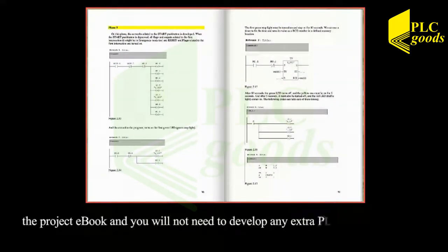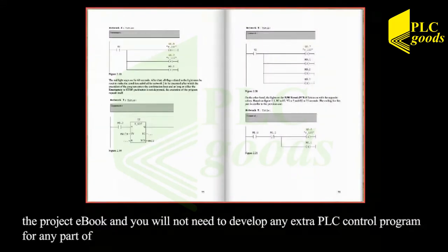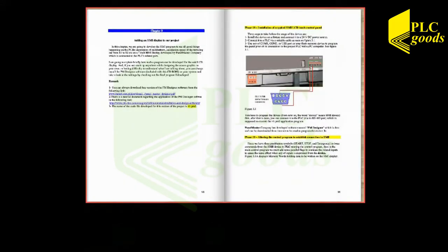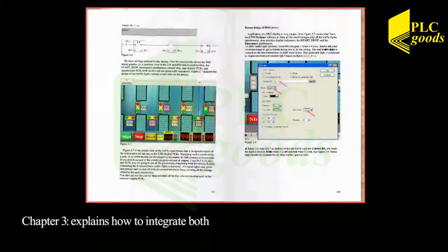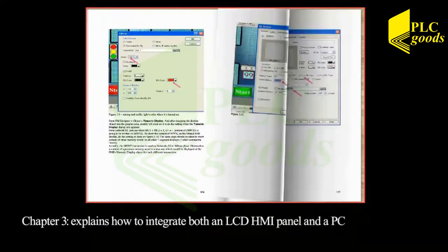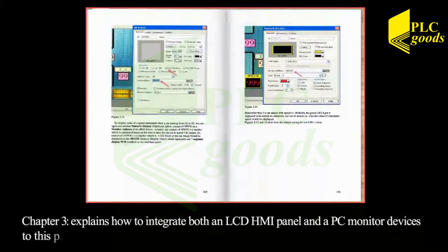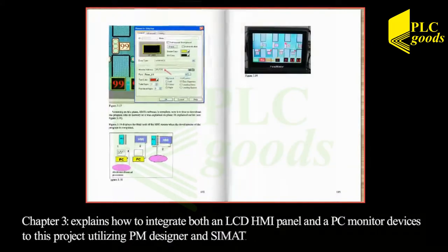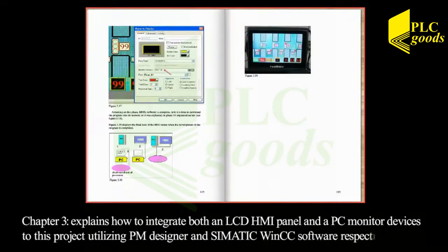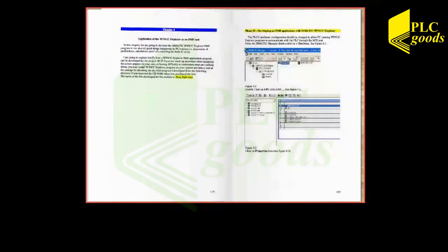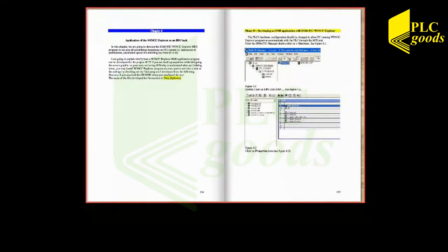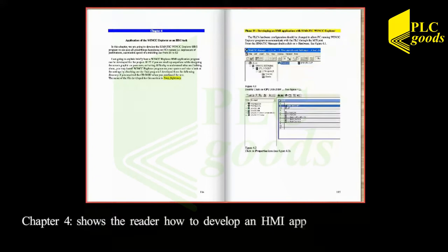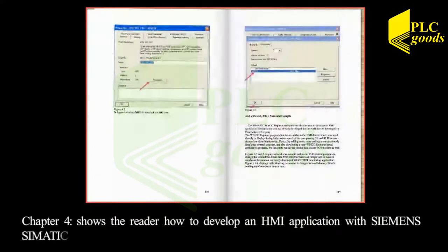Chapter 3 explains how to integrate both an LCD HMI panel and a PC monitor device to this project utilizing PM Designer and Simatic WinCC software respectively. Chapter 4 shows the reader how to develop an HMI application with Siemens Simatic WinCC software.